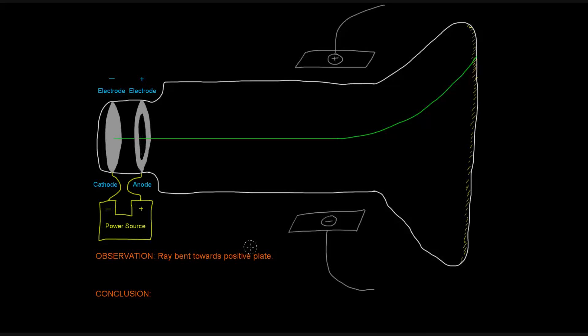So what was the conclusion there? Well, if this beam is attracted to this positive plate, then it must contain a negative charge, right, because opposite charges attract. So his conclusion was that the ray must consist of negatively charged particles.